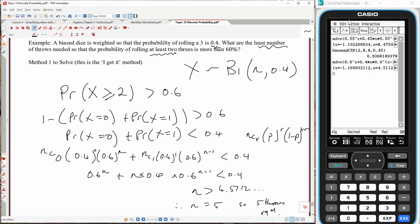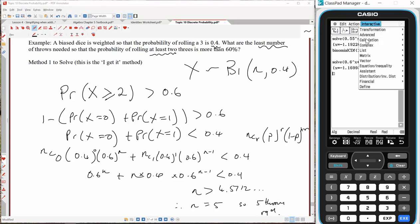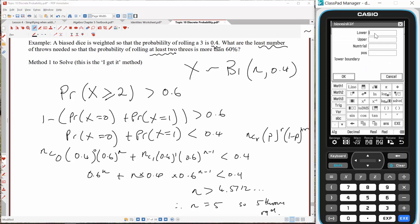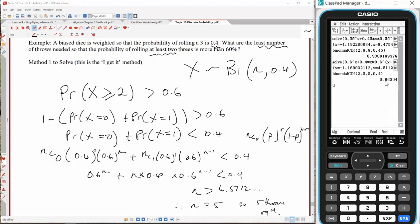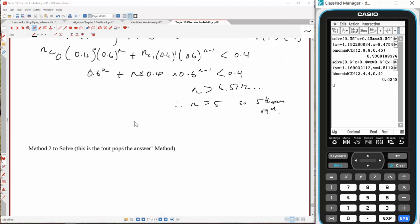So 5 throws required. We can test this pretty quickly by using the cumulative function again. We go to discrete CDF, where our lower is going to be 2, because it's 2 or more, up to our upper value, which is 5. Number of trials is 5, and the chance of success this time 0.4. That's a good sign. So it gave us a probability of 0.66. We wanted it to be more than 60. With 4 trials, what should happen is it dips below 60. There it is, 52%. So it is 5 trials. That's definitely correct.